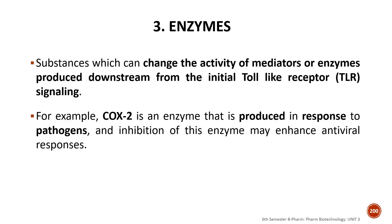During the inflammatory response, arachidonic acid is acted upon by cyclooxygenase 1 and 2. The product is prostaglandin. This enzymatic pathway acts as an immunostimulant during immune responses. So that is the third immunostimulant — enzymes.